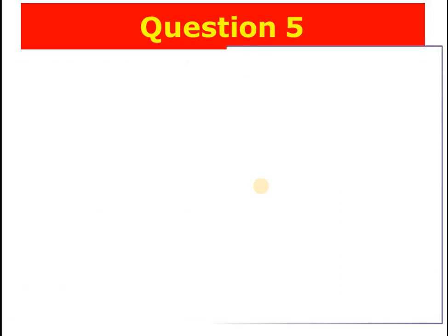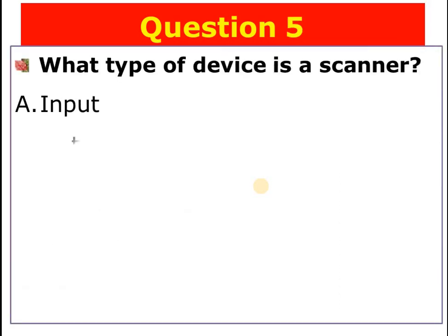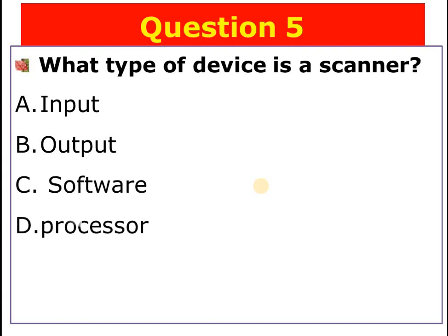Question number five: What type of device is a scanner? A) Input, B) Output, C) Software, D) Processor. The answer is A — a scanner is an input device.